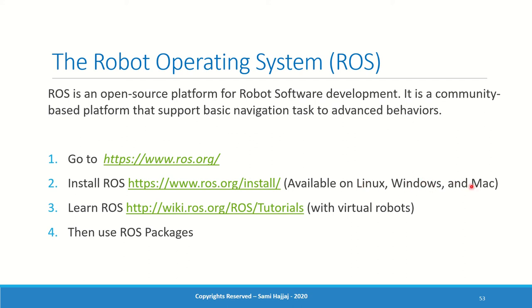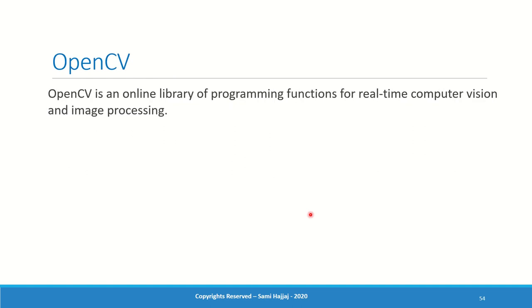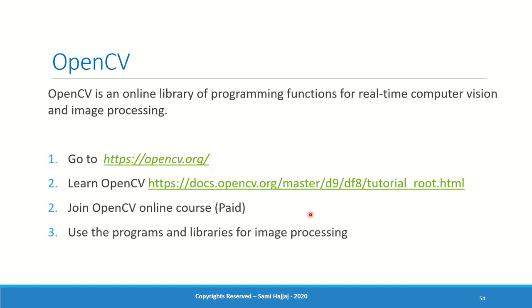Another online resource is OpenCV — an online library of programming functions for computer vision and image processing. If your robot program involves a camera and you want to process the image, OpenCV is the library to check out.